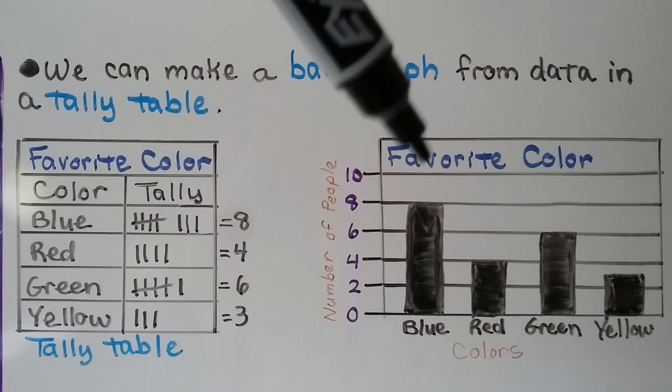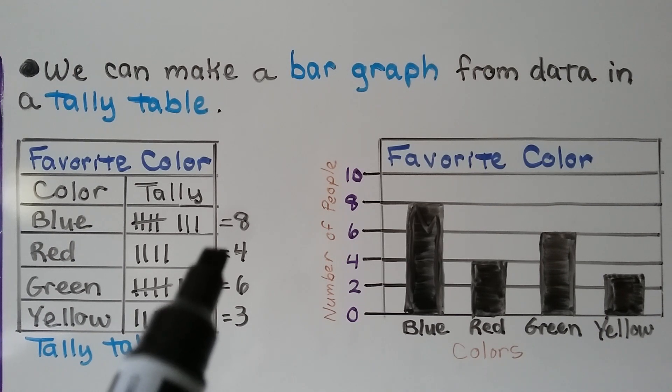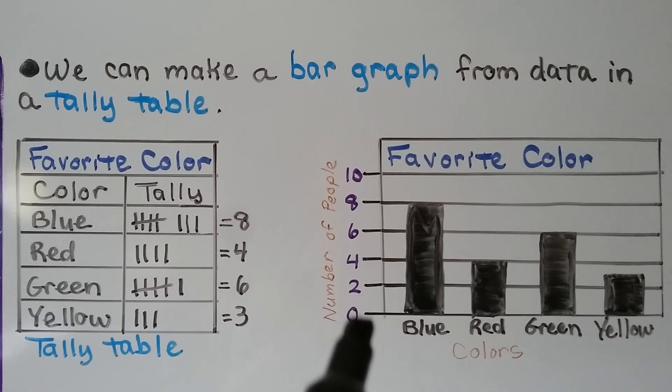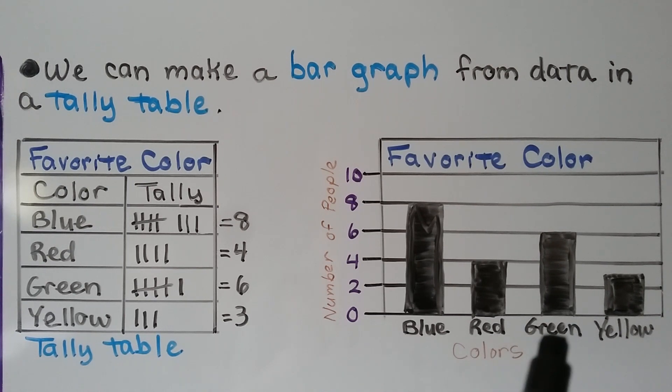We make sure we have our title with each word in capital letters. We make sure that our scale makes sense. Because our numbers were 4, 6, and 8, we made the scale skip count by twos. We labeled it the number of people. We have our color labels here and the label that they are colors. We make sure that our data in our bar graph matches the data from the tally table. We have 8 for blue, 4 for red, 6 for green, and 3 for yellow. So yes, it's correct.